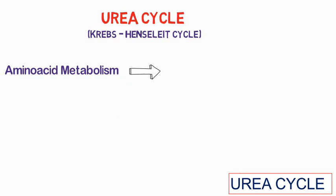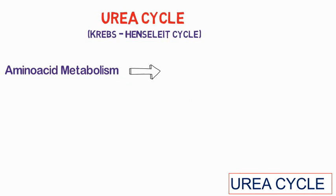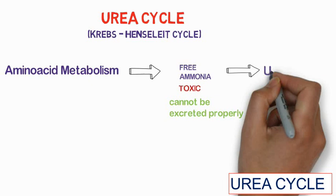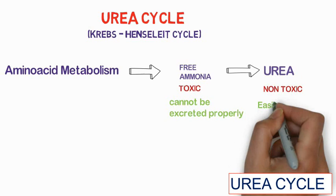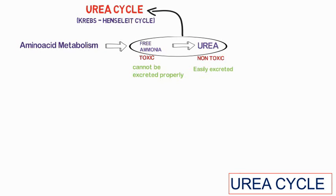Now let's take an overview of the urea cycle, also known as the Krebs-Henseleit cycle. As a result of amino acid metabolism, there is production of free ammonia in the body, which is toxic in nature and cannot be excreted properly. The free ammonia is converted into urea, which is non-toxic and can be excreted properly. This conversion of free ammonia to urea is known as the urea cycle.